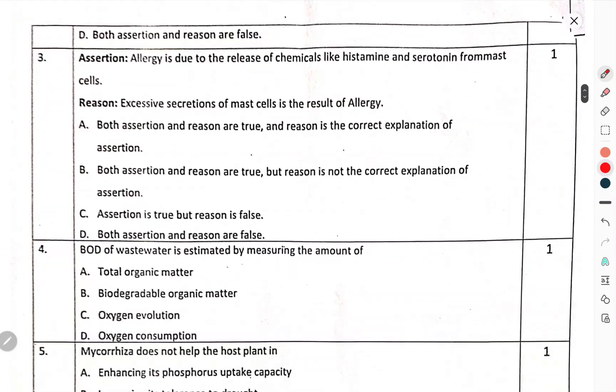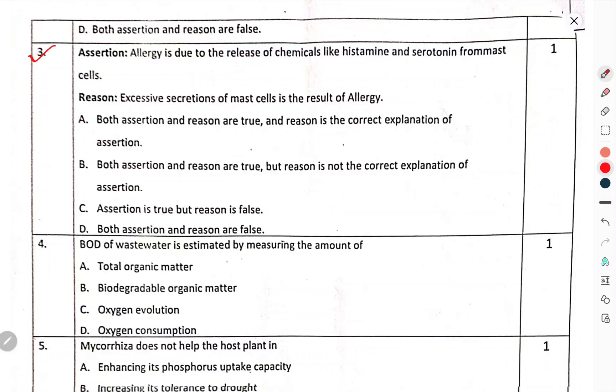Question number 3 — Allergy is due to the release of chemicals histamine and serotonin from mast cells. Excessive secretion of mast cells is a result of allergy.